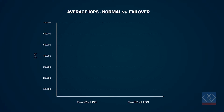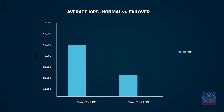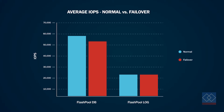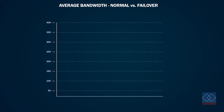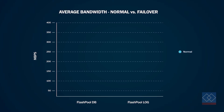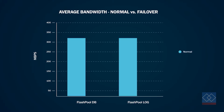We performed another test that combined FlashPool and ClusterData ONTAP. For this test, we ran a database workload with a two-node ClusterData ONTAP configuration and then failed over the cluster so that it was running on one node only. We wanted to observe the performance while the cluster was running in degraded mode. We found that once the failover process was complete, the IOPS and bandwidth performance were the same as they were with both nodes of the cluster running normally.